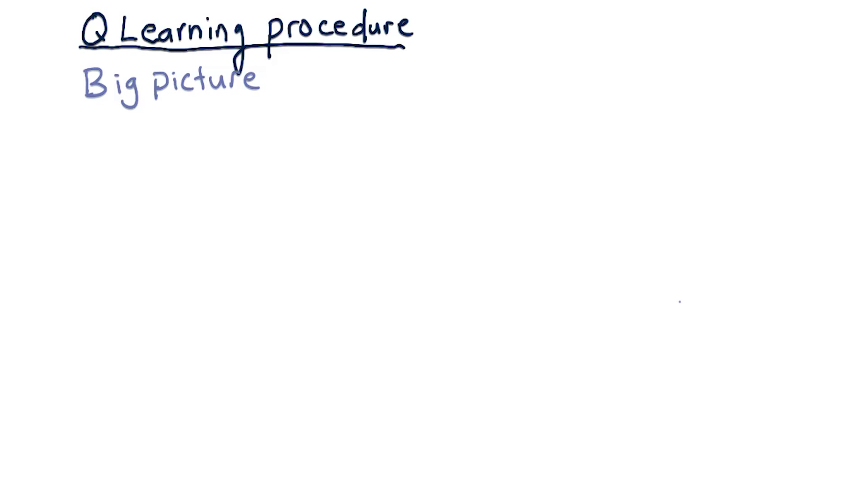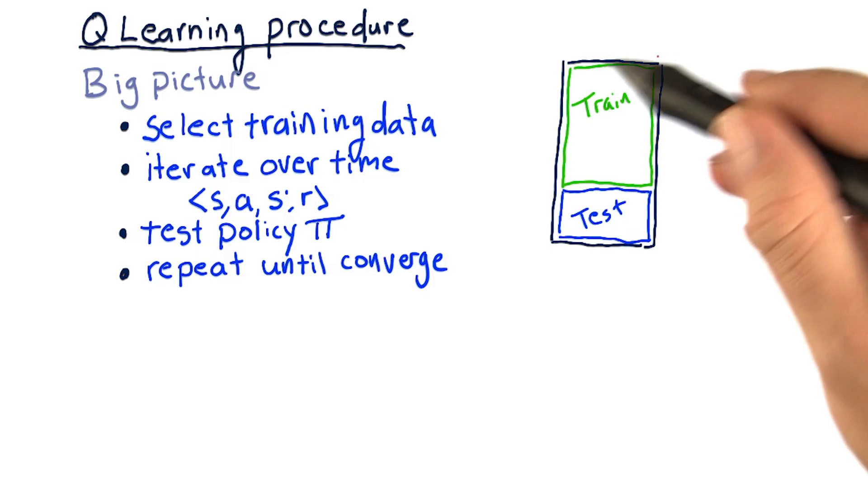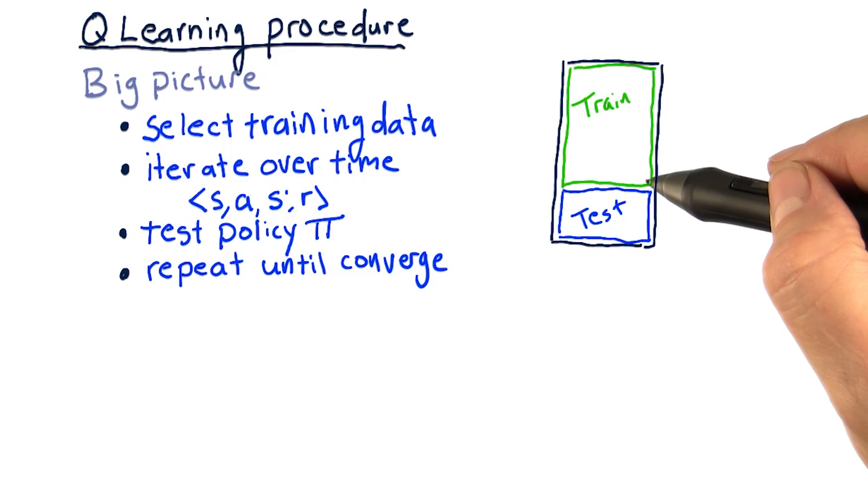Here's the big picture at a high level of how we train a Q Learner. We have our data here and we select which data we want to train on.